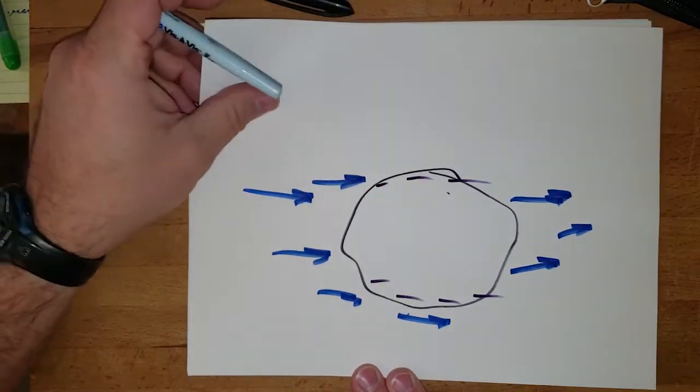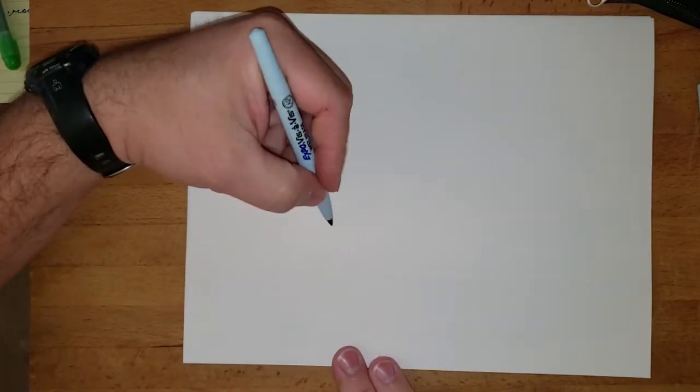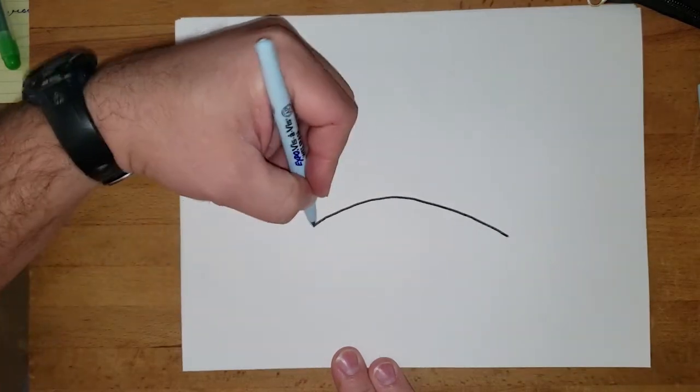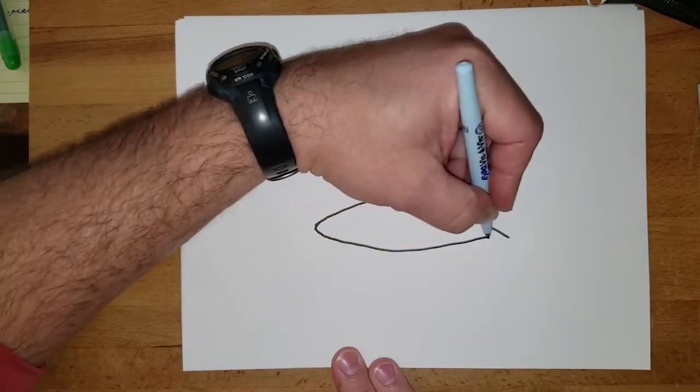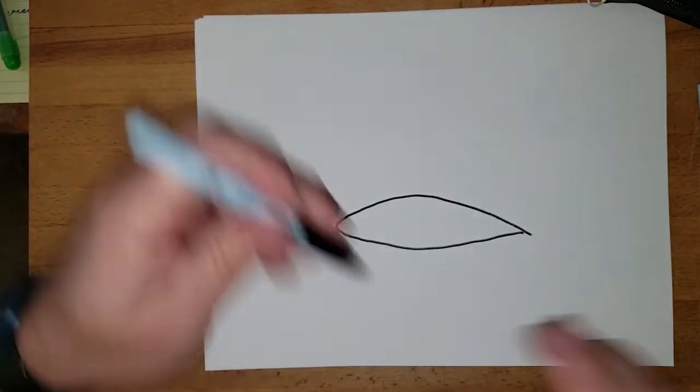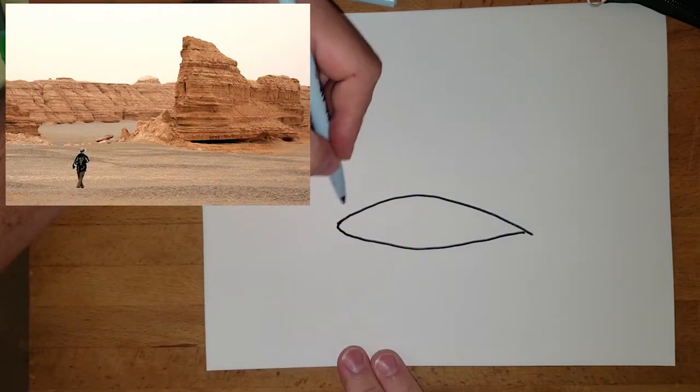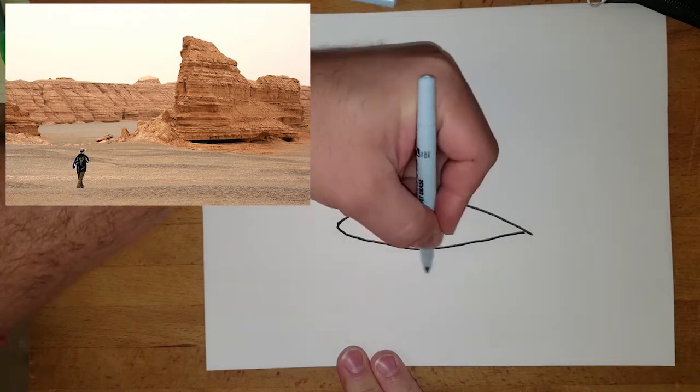What eventually ends up happening is the shape of this rock starts to change. Instead of being that nice round shape, we actually start to get it shaping like the hull of a boat, or the underside of a boat, because that wind has been rushing by sandblasting away at that rock.